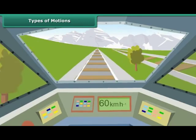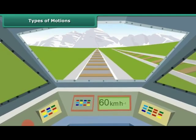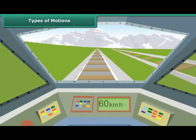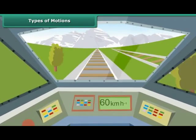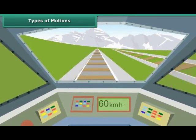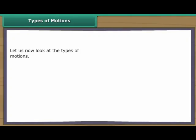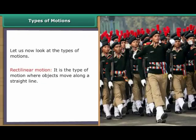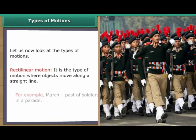Types of Motions. As you know, motion is the change in position of an object with time. The change in its position can be determined through distance measurements. Let us look at the types of motions. Rectilinear Motion. It is the type of motion in which objects move along a straight line.